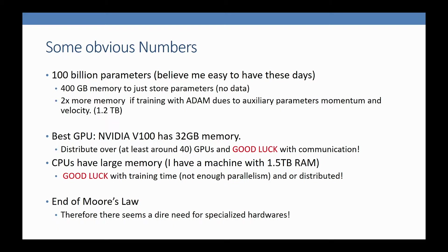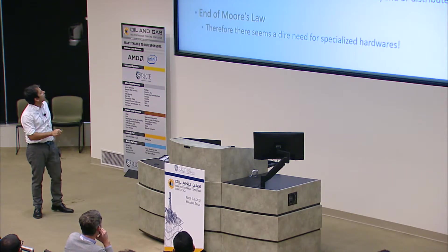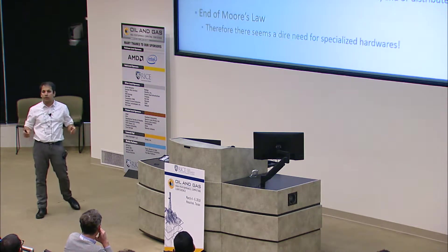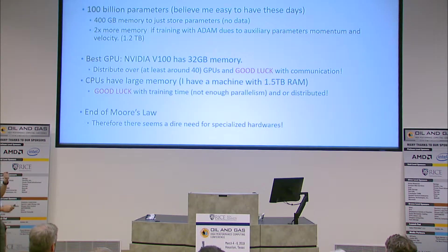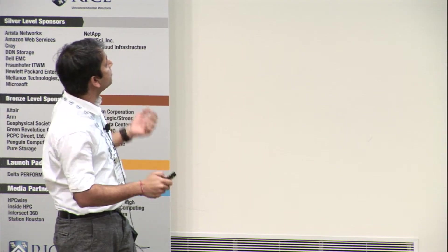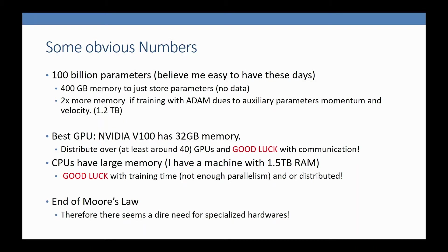Let's look at what we have. The best GPU available, Nvidia V100, has only 32 gigabytes of memory. To train such a model, I'd require at least around 40 GPUs, and good luck with communication. CPUs have big RAM—I have a machine with 1.5 terabyte of RAM—but then good luck with training time, not enough parallelism, and issues of communication if you distribute. We've all seen that Moore's Law has ended. The community is looking towards specialized hardware.